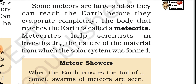When the Earth crosses the tail of a comet, swarms of meteors are seen — these are known as meteor showers. Meteor showers occur at regular intervals each year. You can find the time of their appearance from a scientific magazine or from the internet.